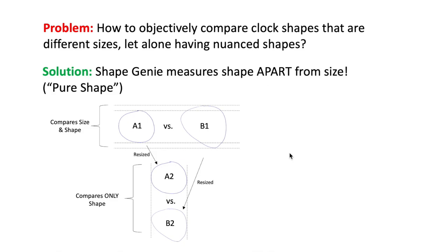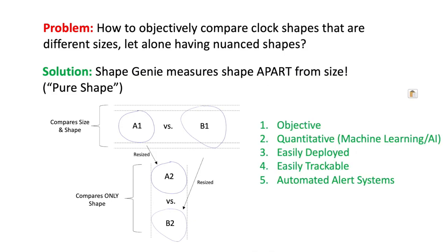But with ShapeGenie, it's very possible. This has allowed us to measure clock shapes in a way that's objective, quantitative — meaning you can now do machine learning and AI on it — and it's easily deployable and easily trackable. The combination of deployability and trackability means we can create a system that sends automated alerts when a person draws a clock monthly, and we can track that the scores are changing in the abnormal direction.